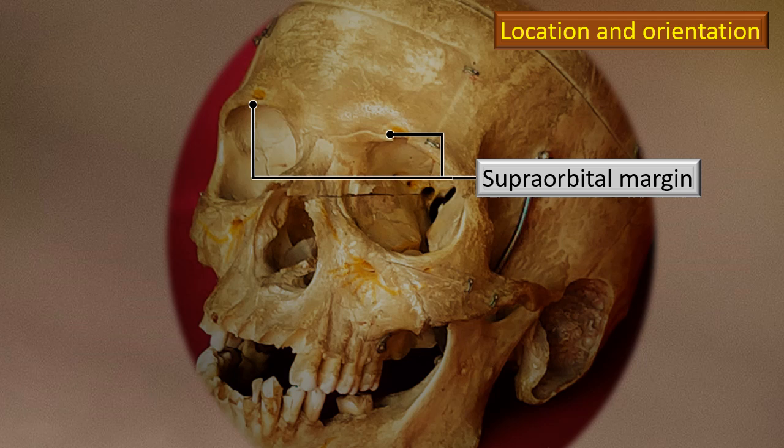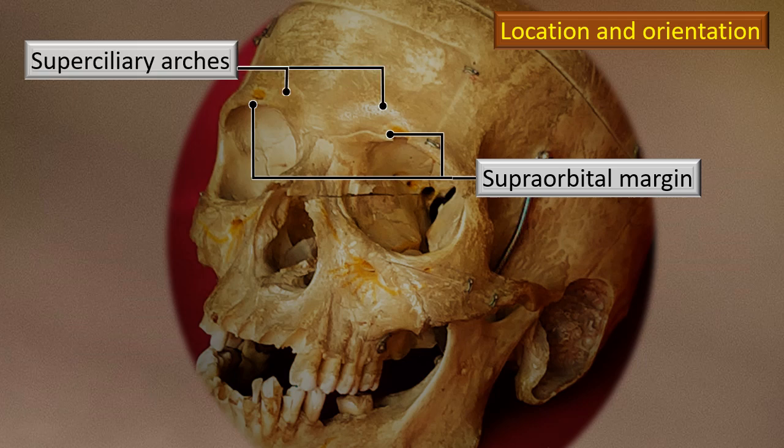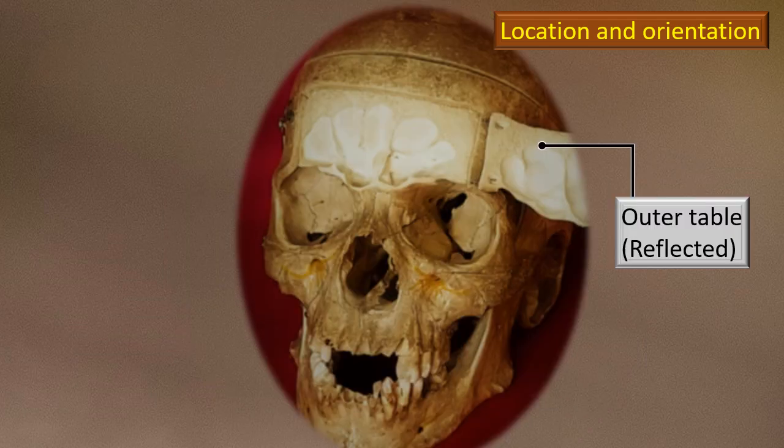Let's discuss the location and orientation of the frontal sinus. Starting with the supra-orbital margin — the sharp margin at the upper border of the orbital cavity — right above that is an elevation called the superciliary arch. The frontal sinus is located deep inside the superciliary arch. The two superciliary arches and the median glabella in between are rough indications of the location of the frontal sinus; it may extend above or a little laterally from these landmarks.